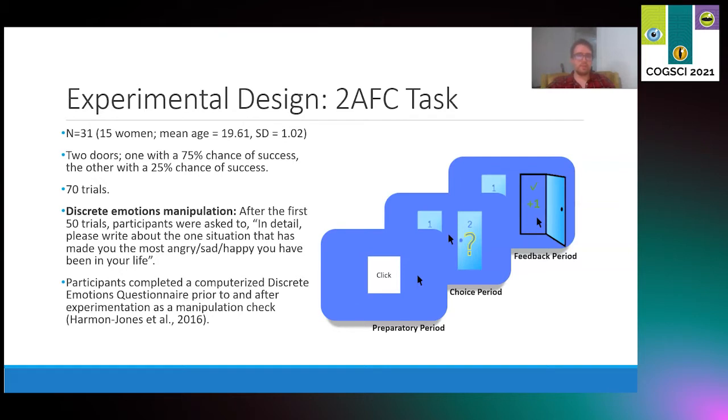To test for the efficacy of the manipulations, we administered a discrete emotion questionnaire both before and after the task. This is a series of nine-point self-report scales in which participants are asked to rate how happy, sad, angry, or desirous they feel at that moment. I'll present the results of those manipulation checks later in the presentation to give our core modeling findings some greater context.